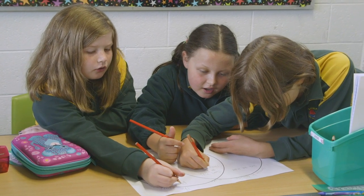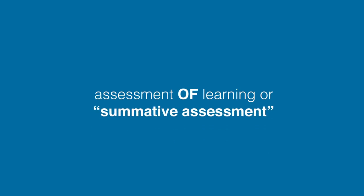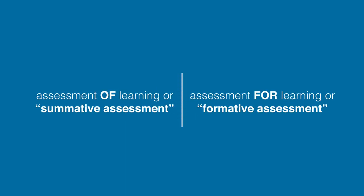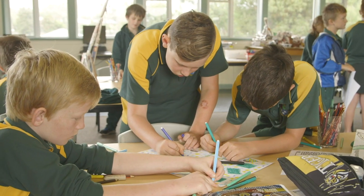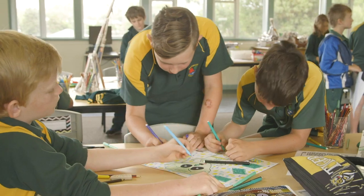Generally, educationalists make a distinction between assessment of learning, or summative assessment, and assessment for learning, or formative assessment. Summative assessment is the snapshot in time that lets the teacher, students and their parents know how well each student has completed the learning tasks and activities associated with a course of study. It provides information about student achievement.